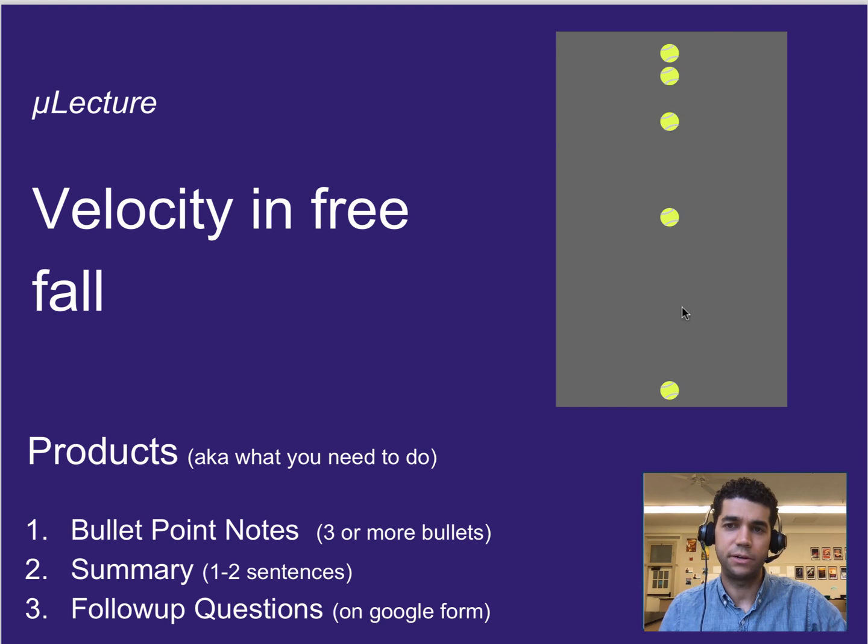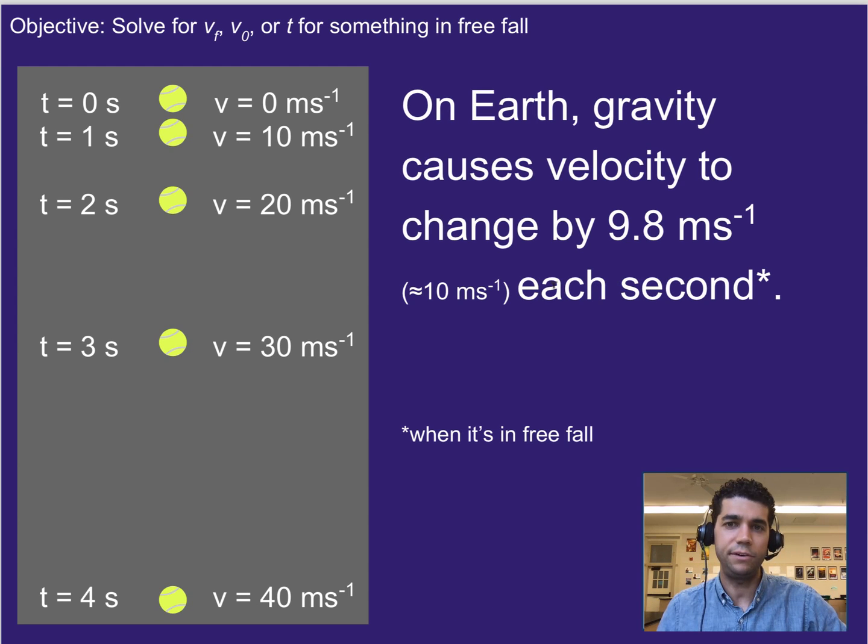Looking at our tennis ball here, we talked earlier about the idea of free fall. This idea that gravity pulls everything down on Earth at a rate of 9.8 meters per second squared. Or, in other words, it causes everything's velocity to change by 9.8 meters per second each second. You can often round this to 10, just for shorthand and to make calculations easy.